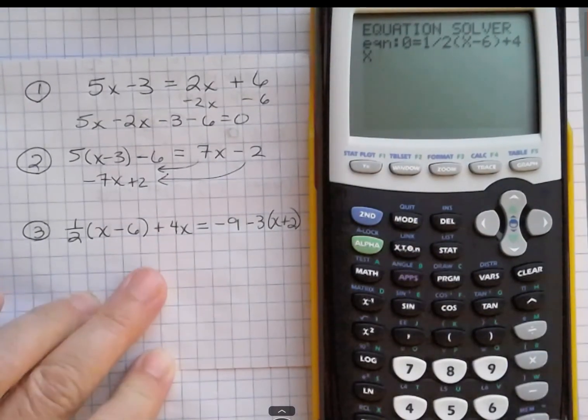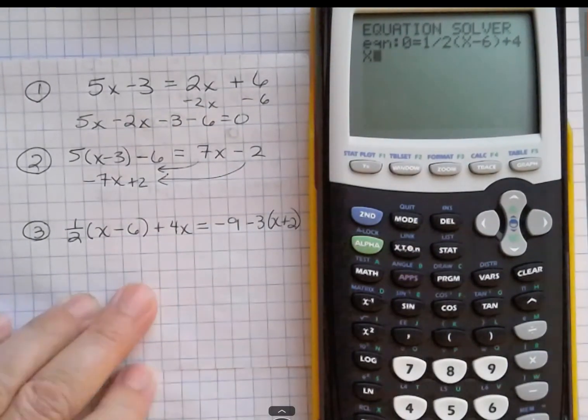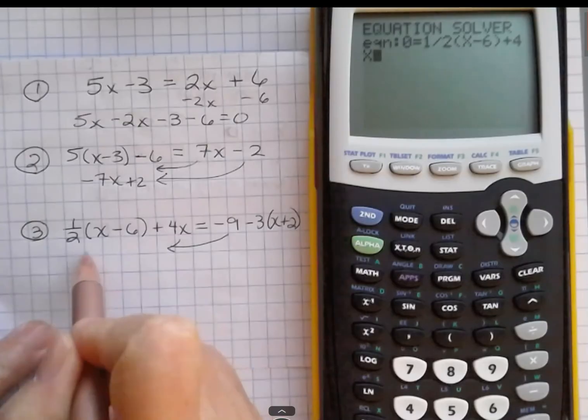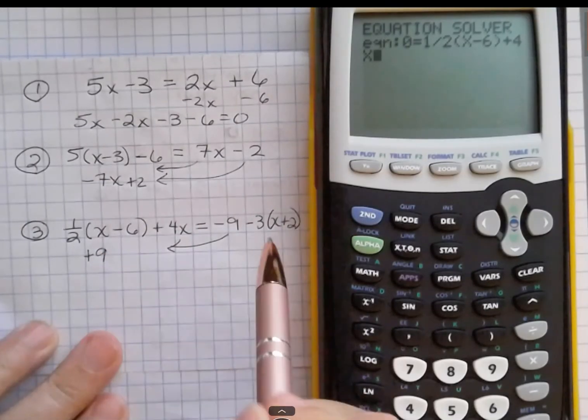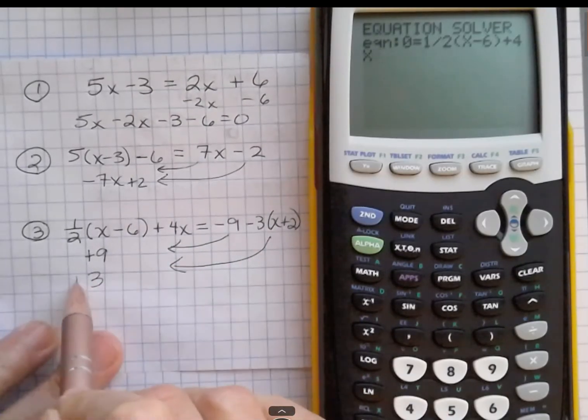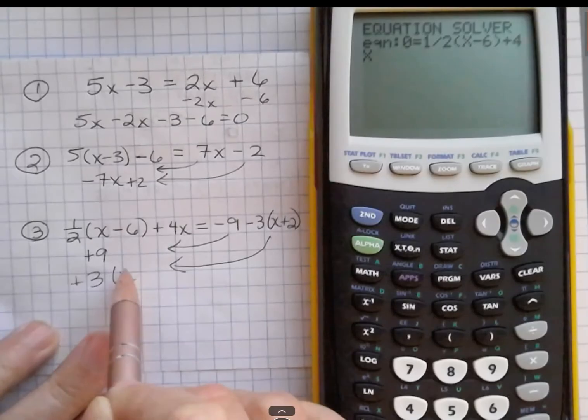And I don't want to have equals because it has to all equal 0, so I'm going to take that negative 9, and when I bring it over to enter it, it's going to become plus 9. And when I bring over this term, it's going to become positive 3x plus 2.